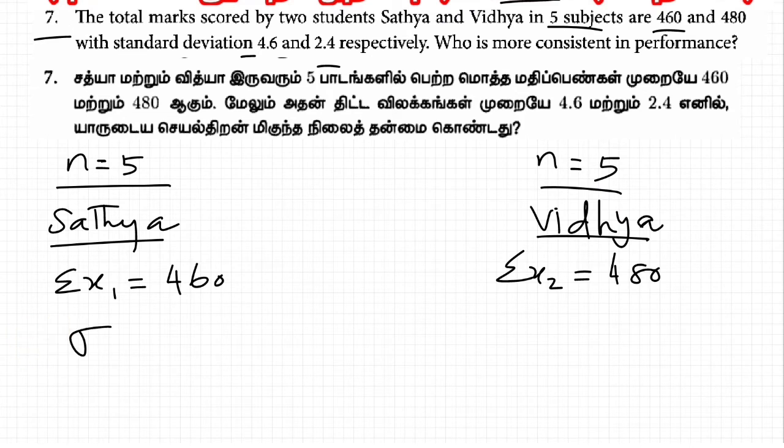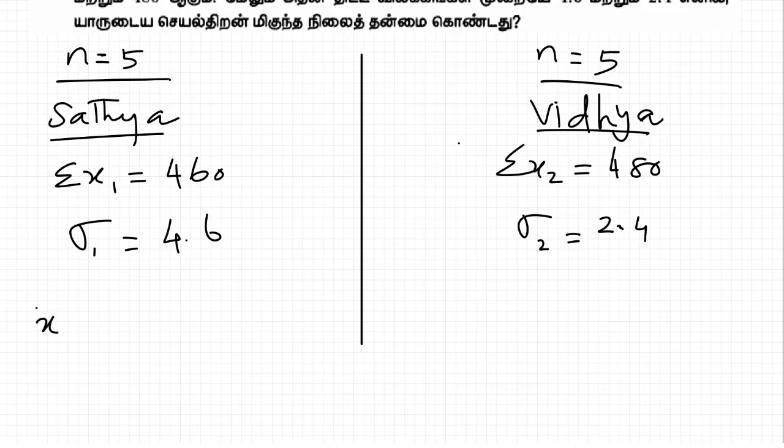Sathya would have standard deviation sigma 1 equal to 4.6. Vidya would have standard deviation sigma 2 equal to 2.4. We need to get the mean average. Mean average x bar equal to sigma x by n, right?